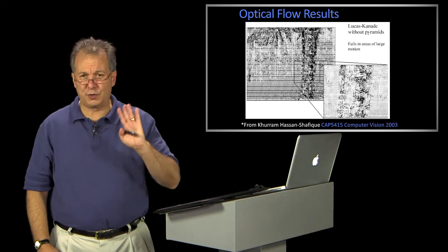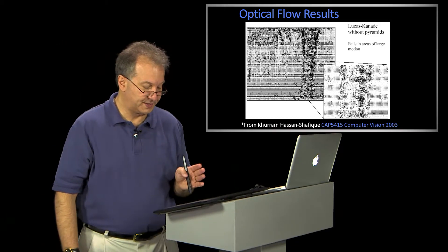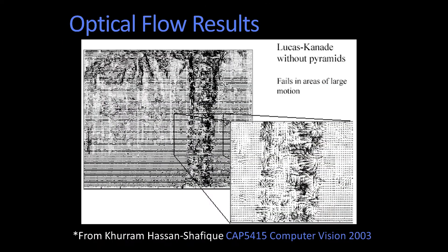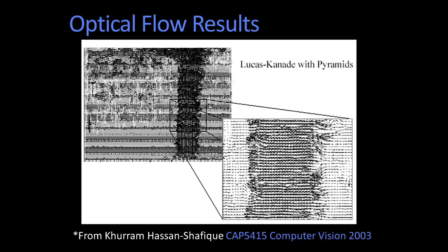Let me show you that this kind of works. Here are some optic flow results taken from a computer vision class, 2003, from a tutorial listed on the bottom. You can see that when you run Lucas-Kanade on that front tree without pyramids, you get sort of terrible results, and when you run it with the pyramid, you get a much better result.